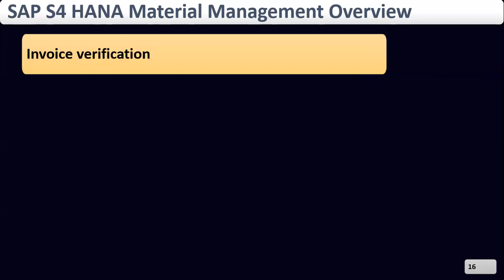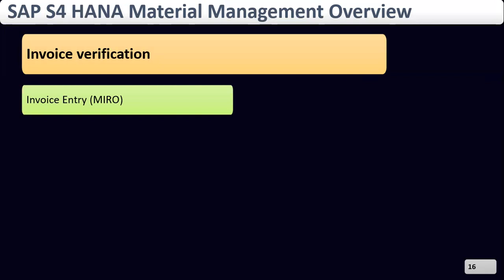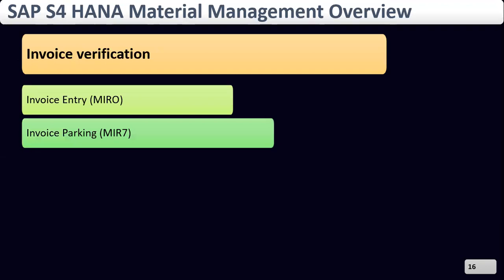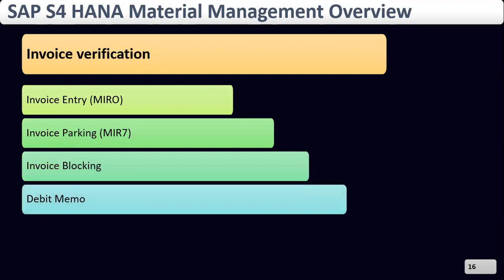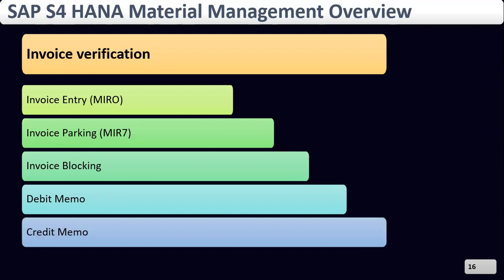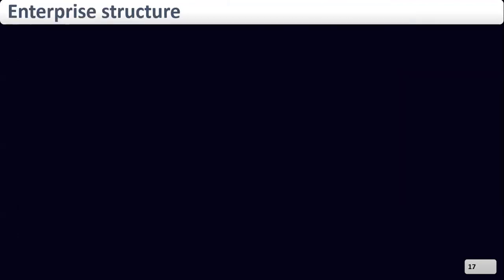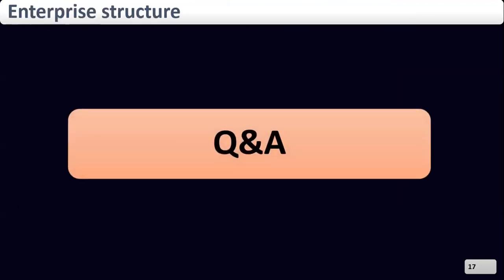Finally, we are going to discuss invoice verification. What is invoice verification? An invoice is a document sent by the supplier to the buyer for payment. The types of invoices available in S4 HANA are: normal invoice entry, parking the invoice, blocking the invoice, subsequent debit, and subsequent credit. We will discuss these in detail in the next sessions. Any questions? Thank you.